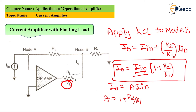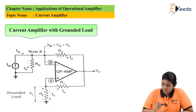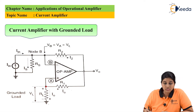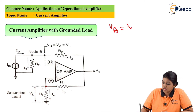So this is how the circuit of current amplifier with floating load can be used as a current amplifier. Now let's see the other circuit, that is current amplifier with grounded load. Here the load is connected to the non-inverting terminal of the op-amp, so the voltage at node A is nothing but VL. We can write VA = VL.